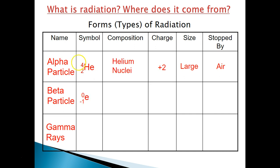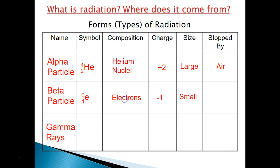Beta particles have the symbol lowercase 'e', with a mass number of 0 and an atomic number of −1. Their composition is electrons, which is why we use 'e' as the symbol. Electrons have a charge of −1, and compared to alpha particles, they are very small. Beta particles can travel through air but can be stopped by something as thin as a piece of paper.